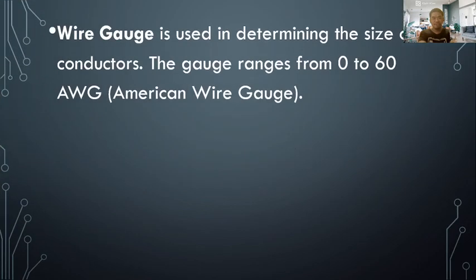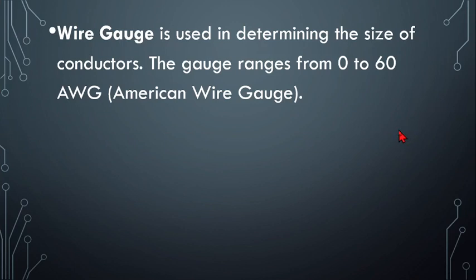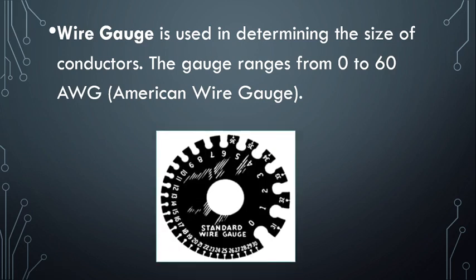Next we have the wire gauge, used in determining the size of conductors. The gauge ranges from 0 to 60 American Wire Gauge, which is the range of wire sizes that can be measured by a wire gauge.